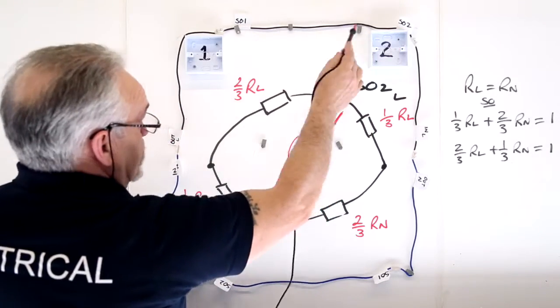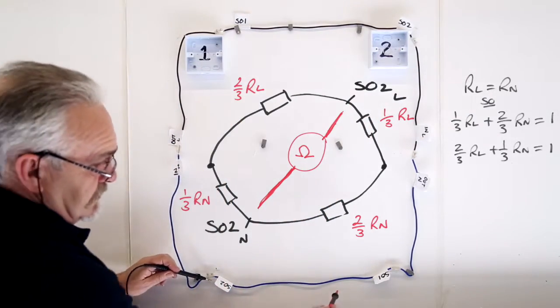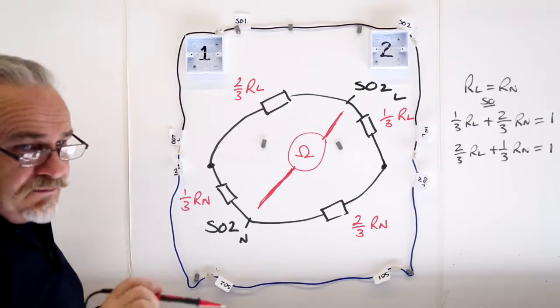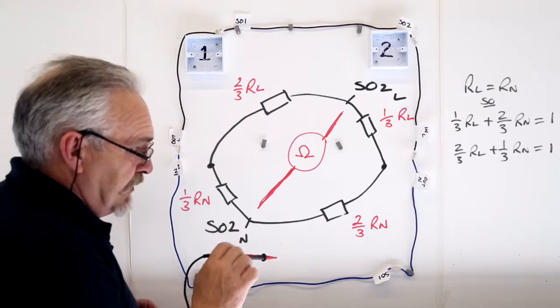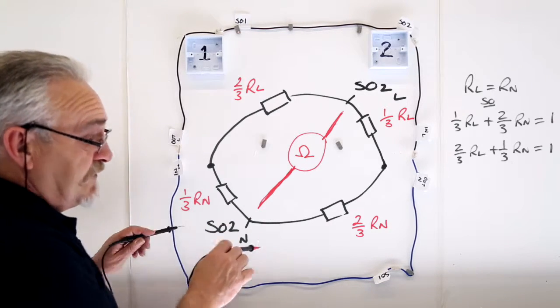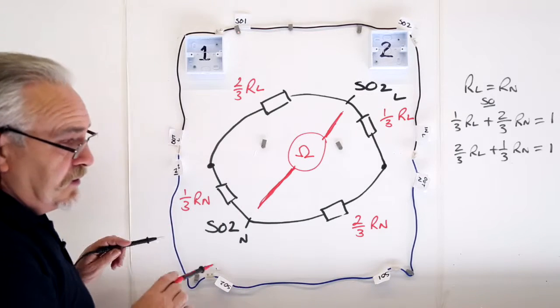We have, again, a measurement. Two thirds, one third. Two thirds, one third. Same value, same resistance in parallel. The resultant resistance is half and you'll find that at each and every point on your circuit.